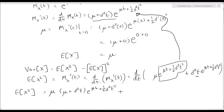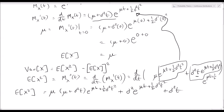Now we need to take the derivative of the second term on the right-hand side. We have t as a product with e to the μt plus one-half σ² t², so we use the product rule. Taking the derivative first with respect to t gives σ² e to the μt plus one-half σ² t², and then we add σ² t times the derivative of the exponential — which is again the MGF of X — so that gives σ² t times (μ plus σ² t) times e to the μt plus one-half σ² t².